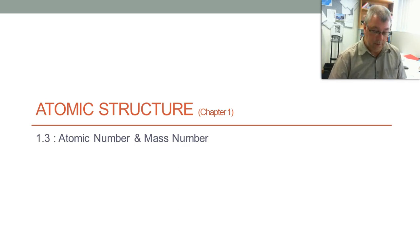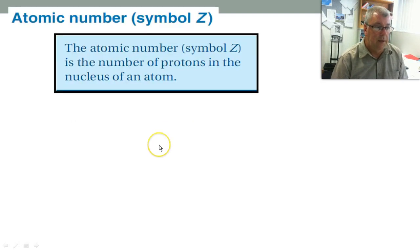Let's get on to atomic number and mass number. Now the atomic number is a term that you need to understand or remember. Sometimes given the symbol Z, it is the number of protons in the nucleus of the atom. And it defines an element. So an element is defined by the number of protons in its nucleus.